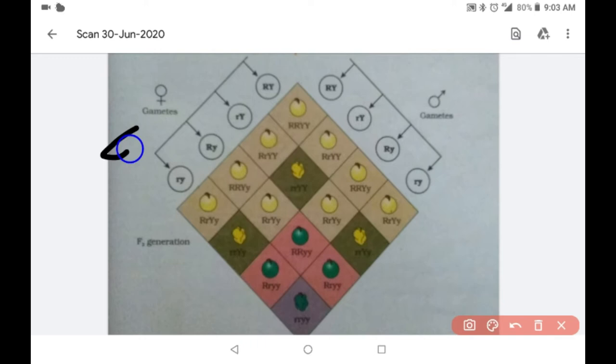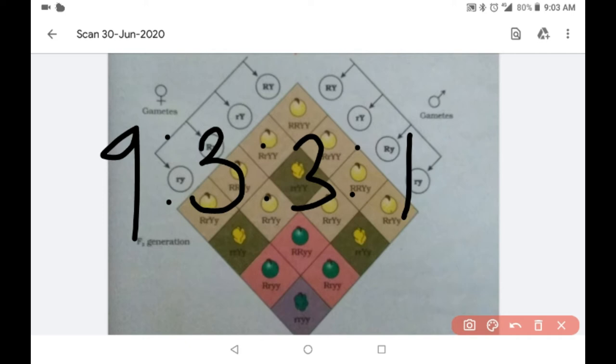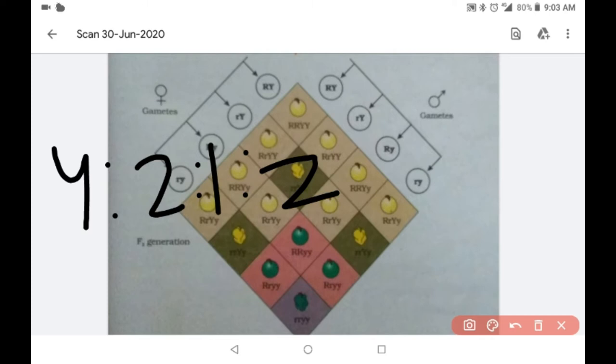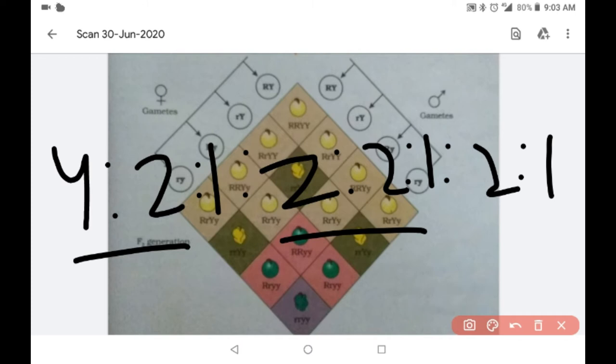But most probably, you will be asked the genotypic ratio also. If you count it, it will take a whole lot of time. So I am giving you a shortcut method to remember it. It is 4, 2, 1. Then 2, 2, 1. And 2, 1. You can check this ratio out. 4 is to 2 is to 1, then 2 is to 2 is to 1, and then 2 is to 1. It is really easy to remember. 4, 2, 1, 2, 2, 1 and 2, 1. You can check this out with this board or you can even google it.